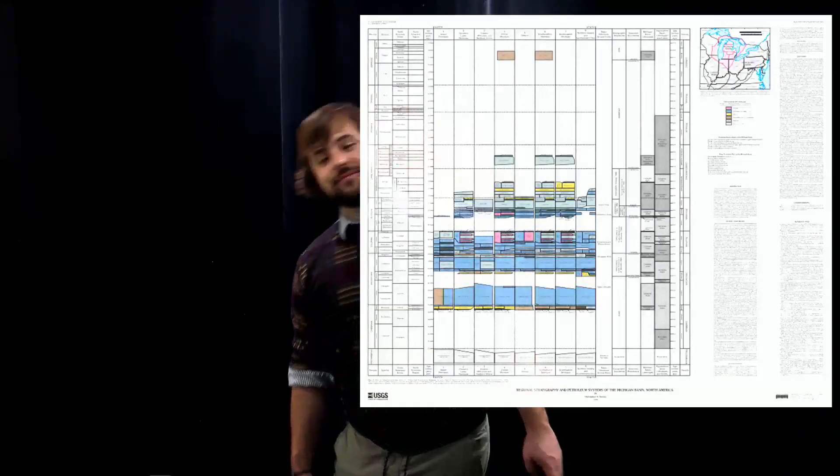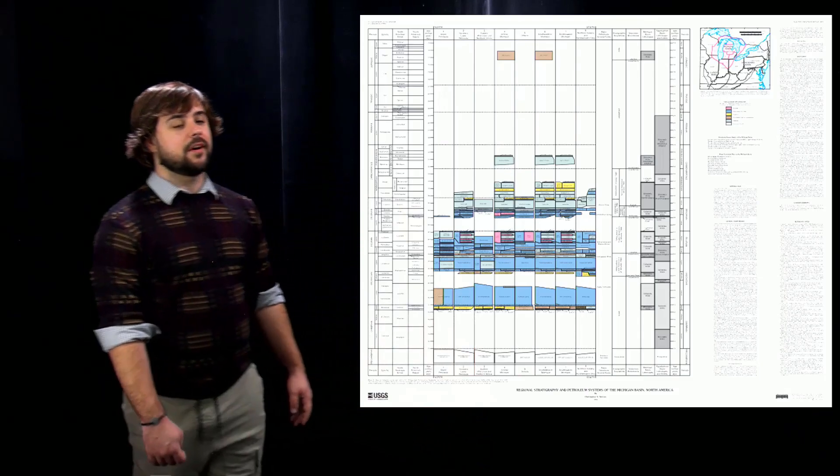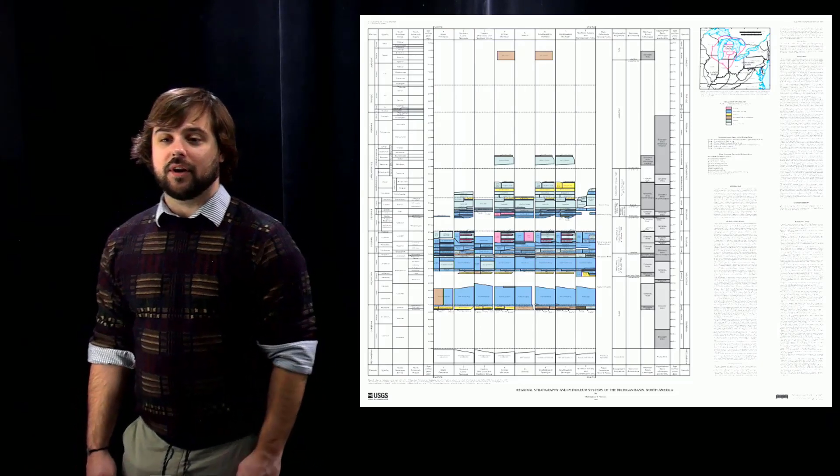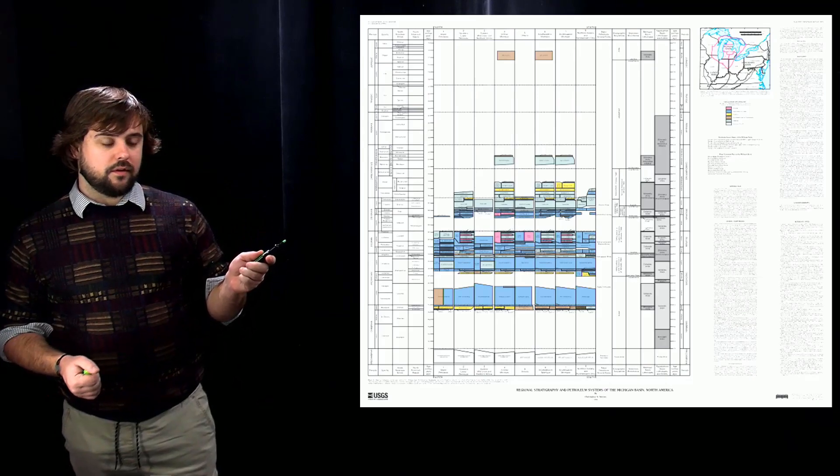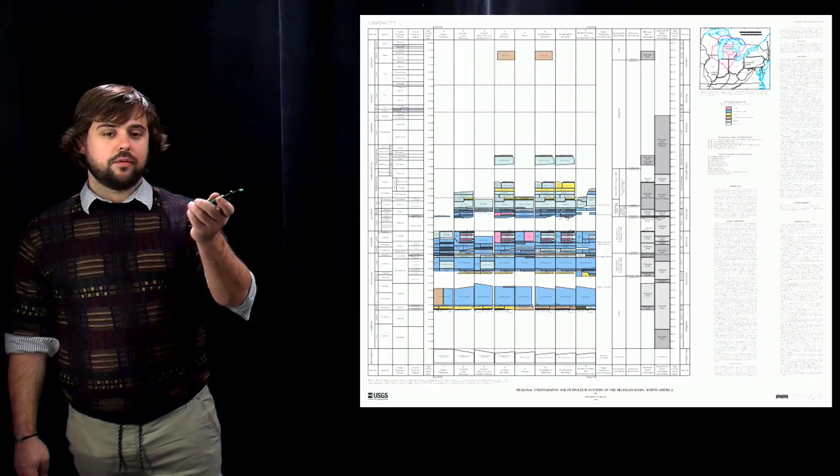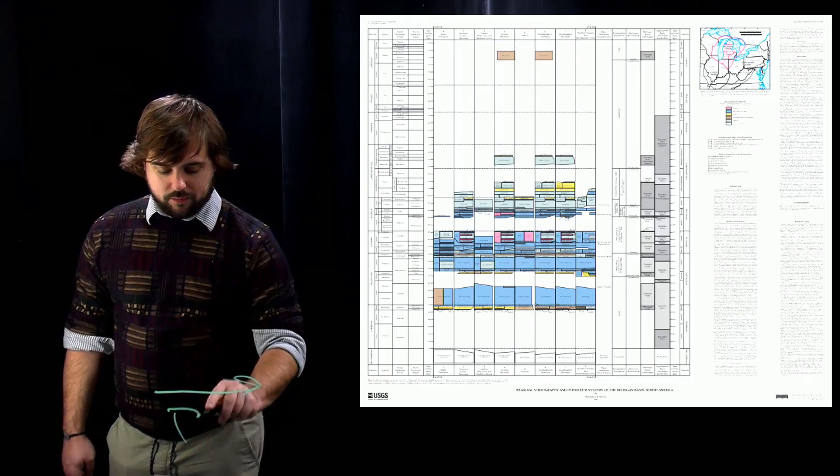Now this is the Michigan stratigraphic column. The Michigan stratigraphic column visually represents the vertical location of rock units within a given area. So we today are going to break these up into one, two, three, four chunks starting with the Precambrian area.